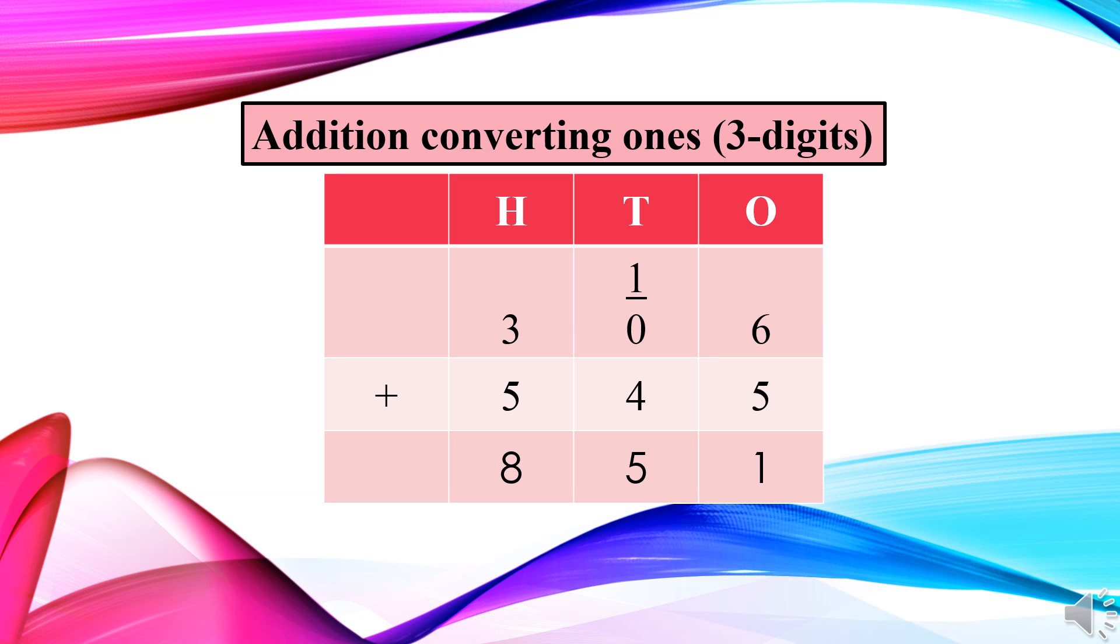So, I hope you all understood addition converting ones. In addition converting ones, only the ones answer will be a two digit number. That's why the tens value number is converted to tens place. Right? I know you all are very intelligent and you can solve the sums easily.